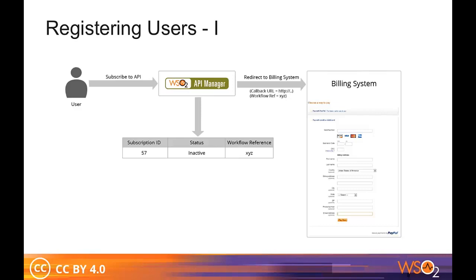First, the system will check whether the API is free or commercial. If free, the user is allowed to move forward. If commercial, the workflow checks to see whether the user exists in your billing system. If not, an HTTP redirect will send the user to sign up in the billing system. The subscription will be created, but it will be in an inactive state and cannot be used until the user is registered in the billing system.